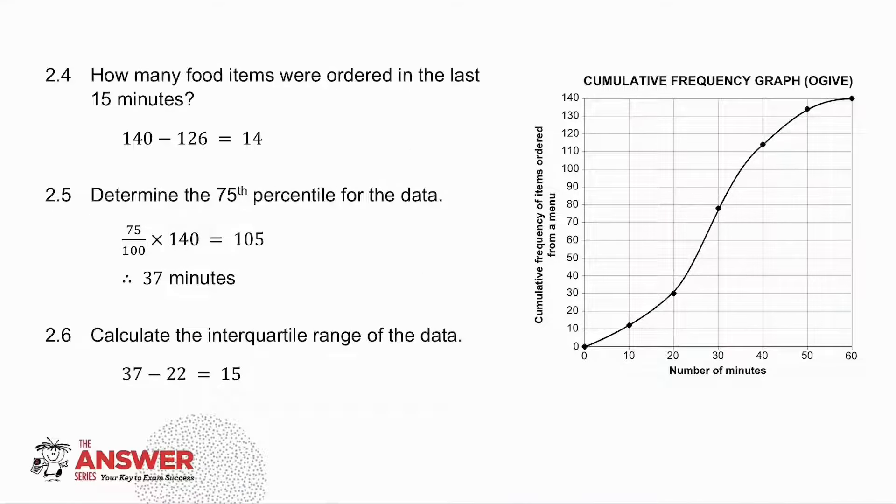2.4, how many food items were ordered in the last 15 minutes? Well, I go up from 45 minutes, which is the last 15 minutes, and I go across. I get approximately 126. The top number is 140. At that point, I've got 126, which means there were 14 food items ordered in the last 15 minutes.